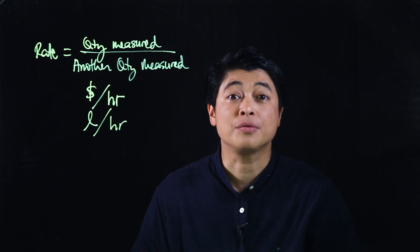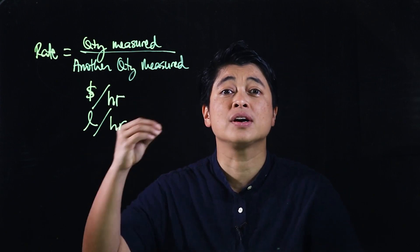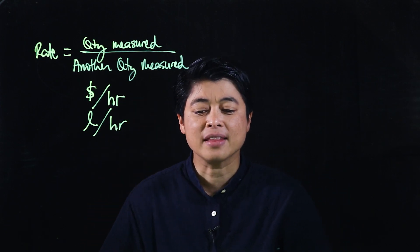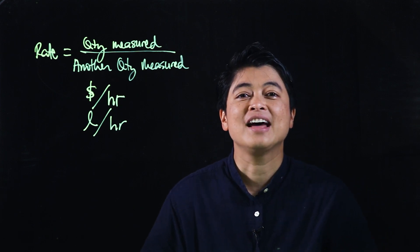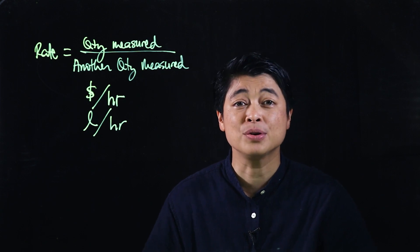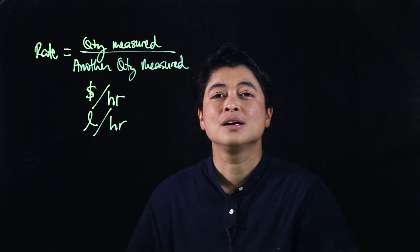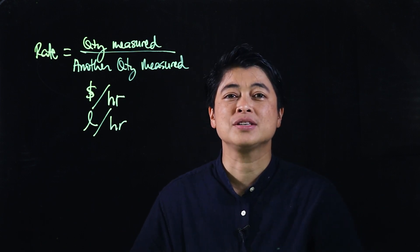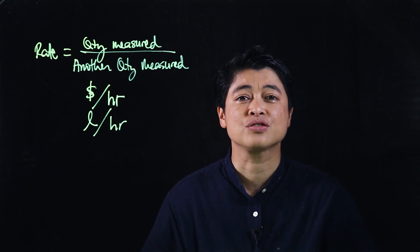That's a rate—it's something over something. The fact that it's something over something means it's a fraction, which means the simplest approach would be similar to the last module, which is the equivalent fraction approach.